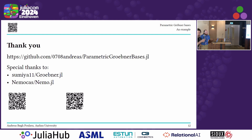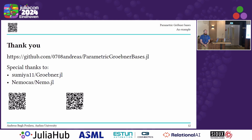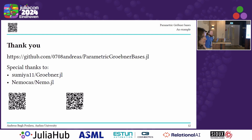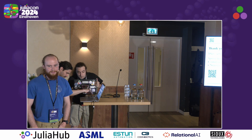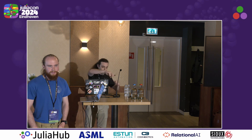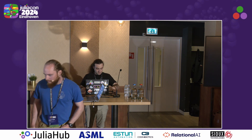Any questions? What algorithm do you use to compute the Gröbner bases? We delegate to Gröbner.jl, which implements Faugère's F4 algorithm. Is the package already registered? It is not registered yet — I am working on that, but not yet; it will be though. Let's thank Andreas once more.